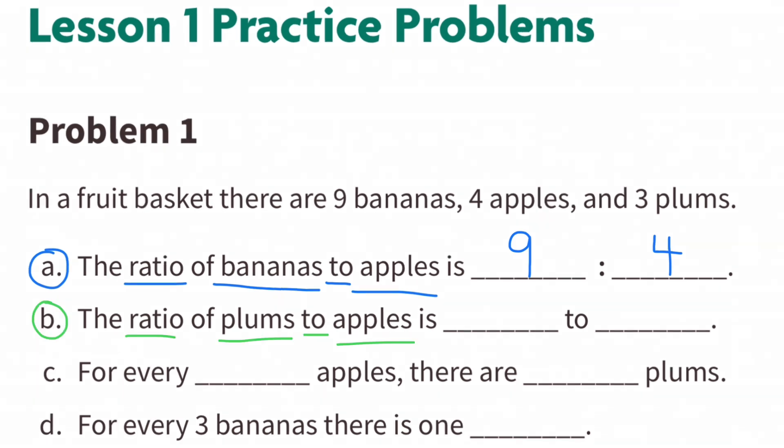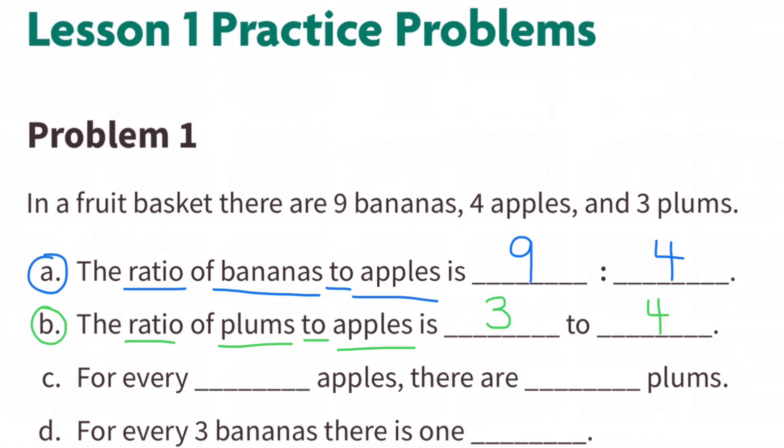Part B: The ratio of plums to apples is 3 to 4, or 3 plums to 4 apples.